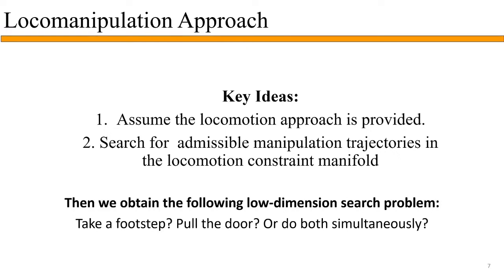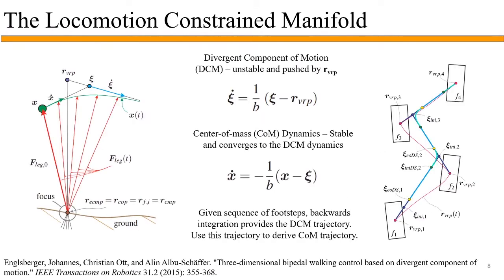So let's discuss the technical details of this approach. For the locomotion approach, we use a divergent component of motion-based walking pattern generator, or DCM, proposed by Engelsberger. Given a sequence of footsteps and temporal parameters for how fast to take the footsteps, we can obtain a DCM trajectory and a corresponding center of mass trajectory. Note that other locomotion approaches are also possible.